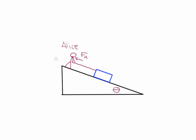Alice is not touching the box directly — she's pulling on the rope. Now we're going to add a second person, and that person is Bob. Bob is pushing on the box with a force F sub B, and he's pushing parallel to the surface of the hill.